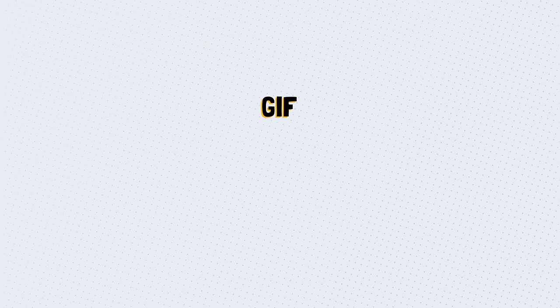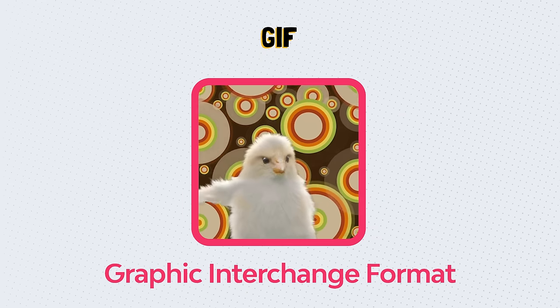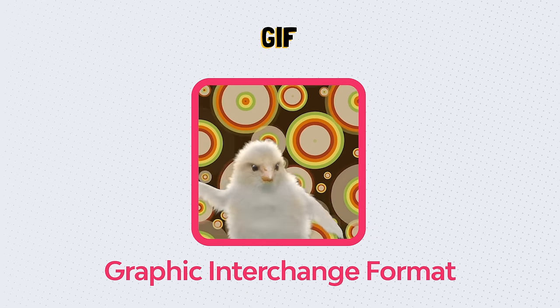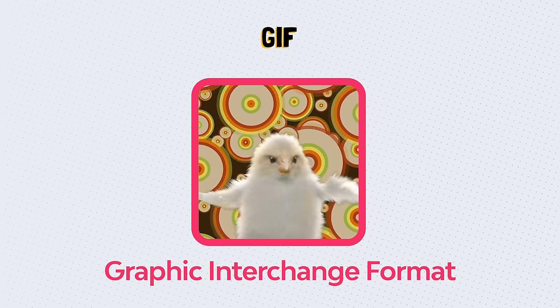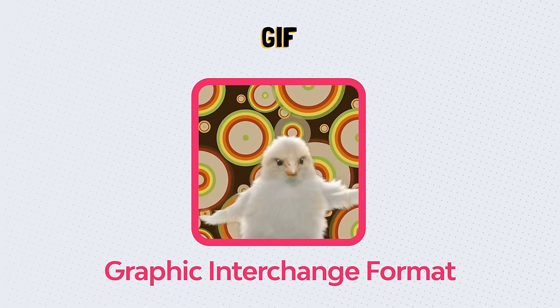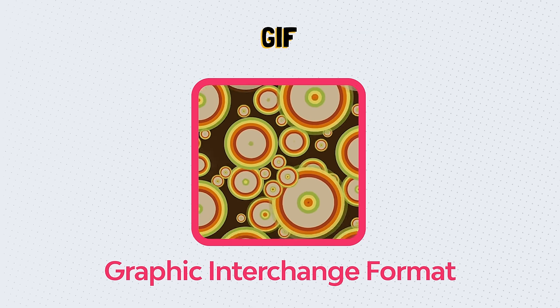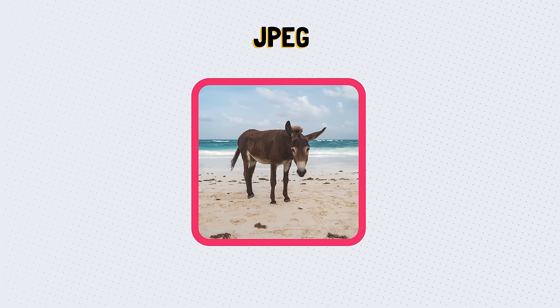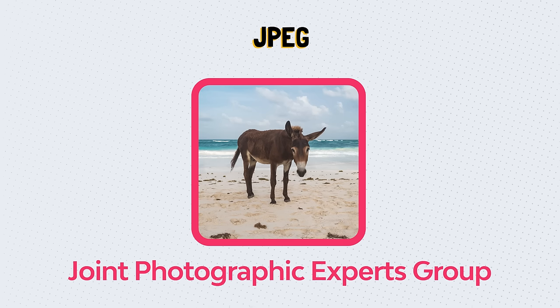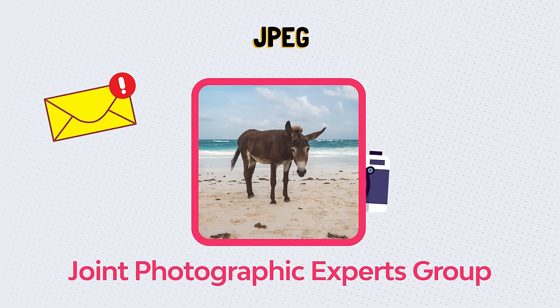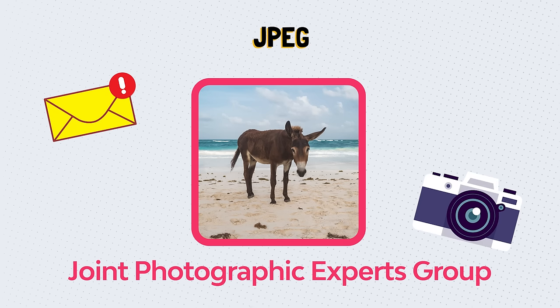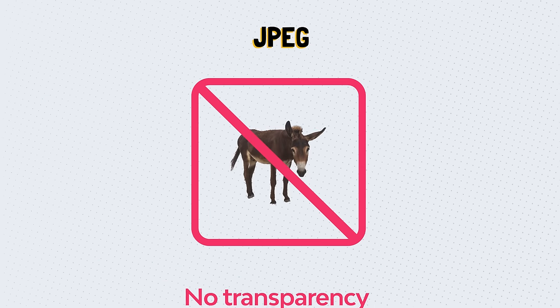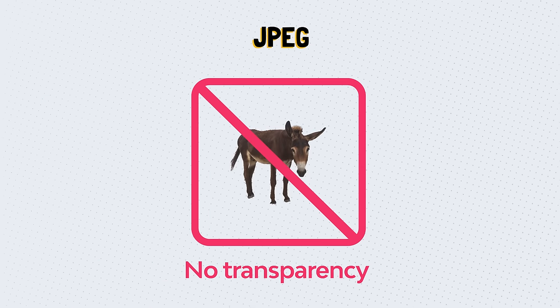GIF stands for Graphic Interchange Format. This file format supports animation and transparency. It can only display up to 256 colors, which allows for small files — perfect for the web. JPEG is the most widely known raster file, standing for Joint Photographic Experts Group. It is used everywhere from email images to photos found online. JPEG doesn't have the ability to be transparent, and it is suitable for both web and print.